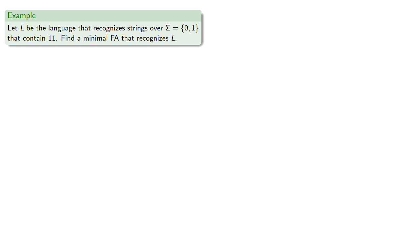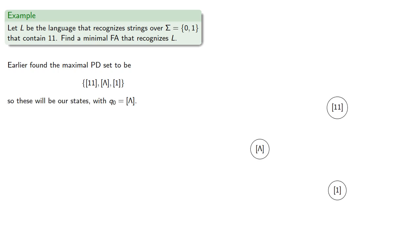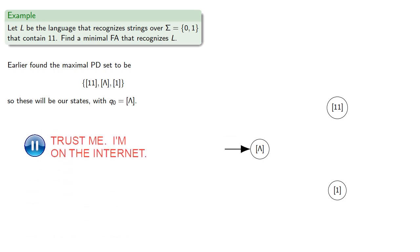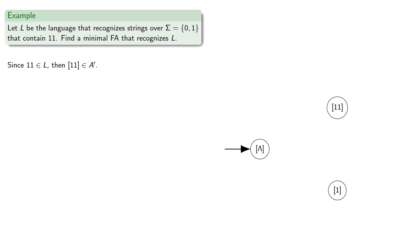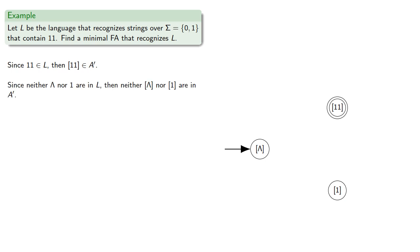Let L be the language that recognizes the strings over {0, 1} that contain 1,1, and find a minimal finite automaton that recognizes L. Earlier we found a maximal pairwise distinguishable set, so these will be our states with the initial state being the equivalence class of the empty string. Now since 1,1 is in our language, the equivalence class of 1,1 is going to be one of our accepting states. And since neither the empty string nor 1 are in the language, neither equivalence class can be an accepting state. So our set of accepting states is just the equivalence class of 1,1.